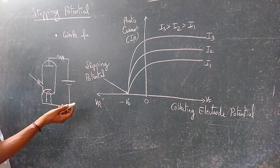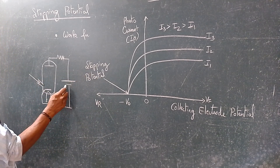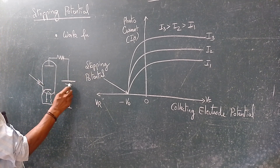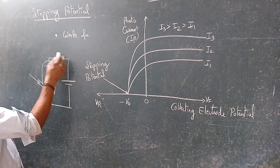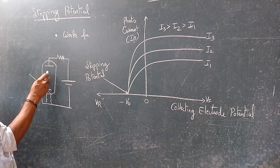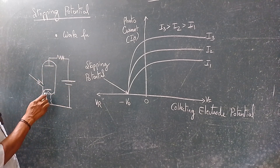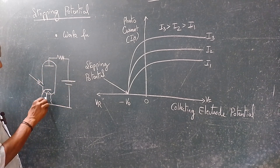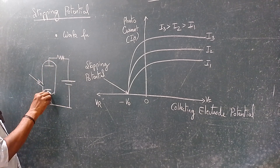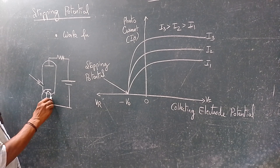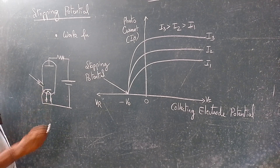This is a photocell. Here we connect a DC source — the positive is given to the anode and the negative to the cathode. You can have a filament to heat the cathode.